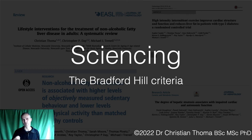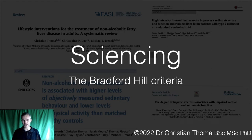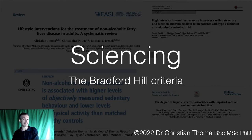Welcome back to the series that I'm calling, a little bit tongue-in-cheek, Sciencing. It's intended to help you better understand and better interpret scientific research. In this module, we're going to look at the Bradford Hill criteria, a set of criteria that can be applied to observational research to get a sense of the likelihood of a correlation actually indicating a causal relationship.